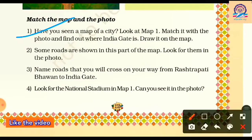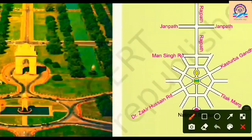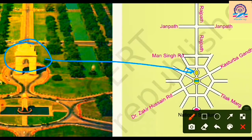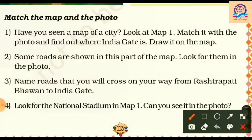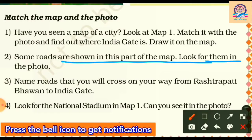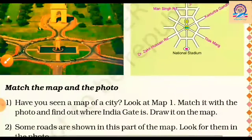Now they are asking us to match the map with the photo. The first exercise is: look at Map 1, match it with the photo, find where India Gate is and draw it on the map. We have compared the photograph and the map and identified India Gate on both. The second question asks: some roads are shown in this part of the map — look for them in the photo and name the roads you will cross on your way from Rashtrapati Bhavan to India Gate.